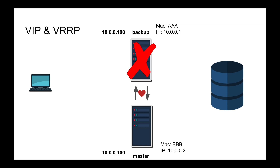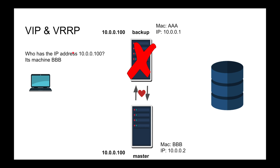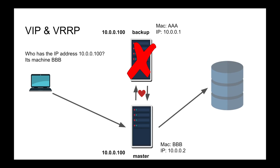Machine BB calls it and says: I'm the master now. It assumes the role of master node for IP address 10.0.0.100, and then tells the entire network: hey, by the way, it's now me — 10.0.0.100 is BB now, it's not AA anymore. Everybody updates their ARP tables, and now if you make a request it automatically goes to the new master. That takes just a fraction of a second.